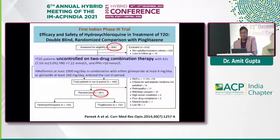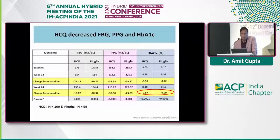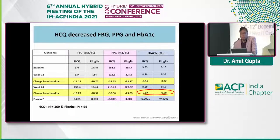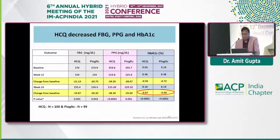Looking at the first Phase 3 trial assessing efficacy and safety of HCQ — a double-blind randomized comparison with pioglitazone — HCQ decreased both fasting blood glucose and postprandial glucose (PPG), with a significant reduction in HbA1c. At 12 weeks, fasting glucose change was 21.13 mg/dL, PPG change was 39.35 mg/dL, and HbA1c reduction was 5.56%. These improvements persisted and remained statistically significant at 24 weeks.